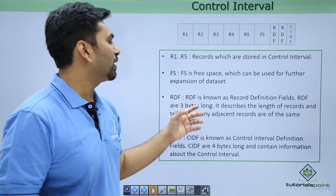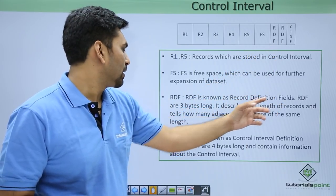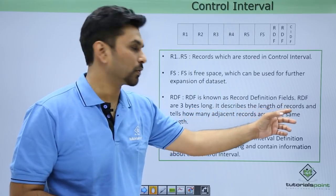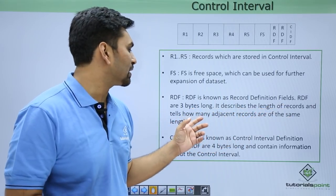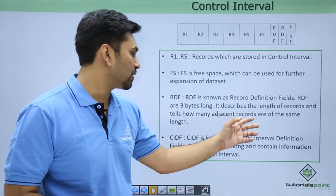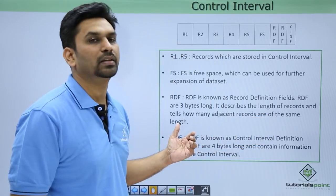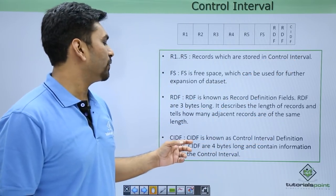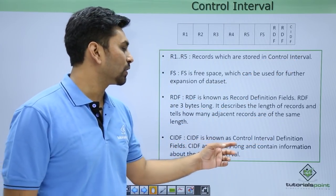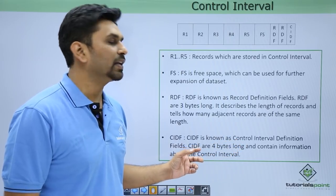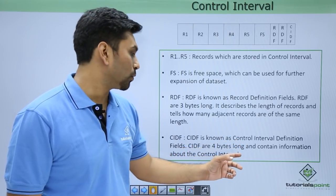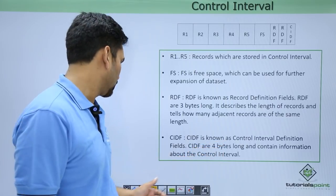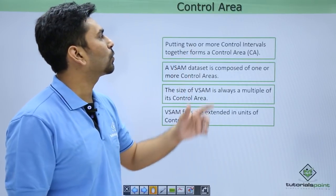Then we have RDF — Record Definition Fields. RDF are three bytes long and describe the length of records, and tell how many adjacent records are of the same length. Then we have CIDF — Control Interval Definition Fields. CIDF are four bytes long and contain information about the control interval.